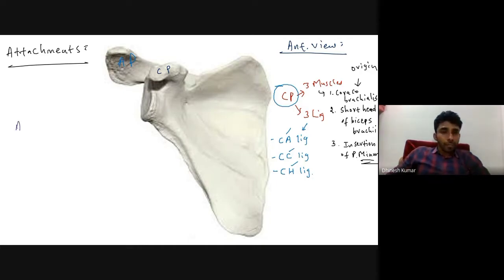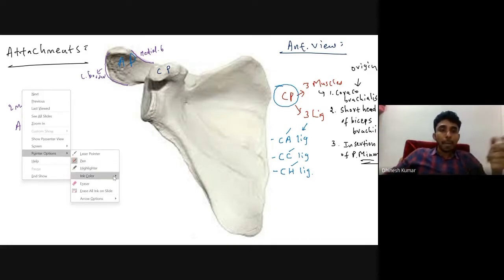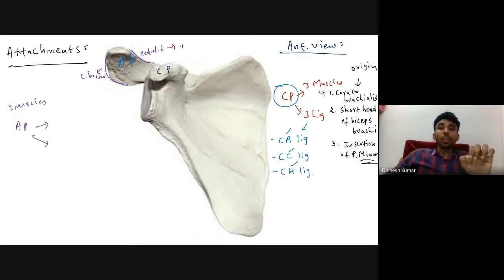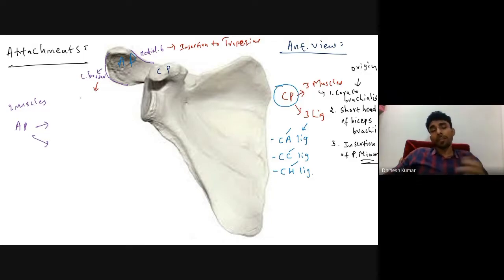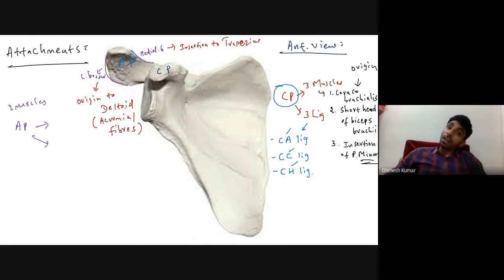Now two muscles are attached to the acromion process. The medial border of the acromion process gives insertion to the trapezius muscle. The lateral border of the acromion process gives origin to the deltoid muscle — specifically those fibers are called the acromial fibers of deltoid, because of their site of origin from the acromion process.